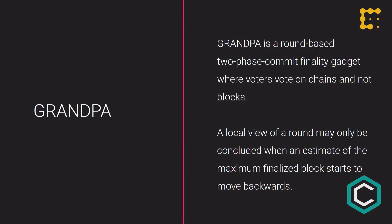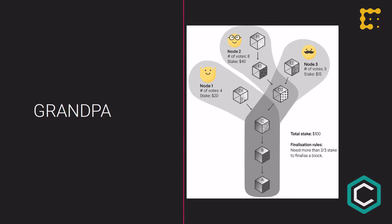In GRANDPA, instead of proposing a specific block for agreement, people vote on which chains they see. I'll say 'I see this blockchain — that's the best block I see, including all its ancestors.' Someone else might say 'I see chain B,' but at some point they share a common ancestor. GRANDPA figures out the common ancestor block that at least two thirds of people agree upon — accounting for the one third which may be dishonest — and once found, those blocks can't be reverted without paying a substantial cost.